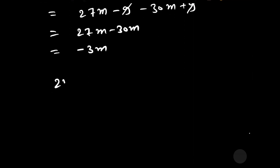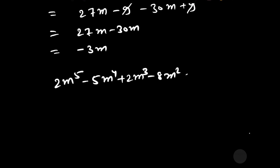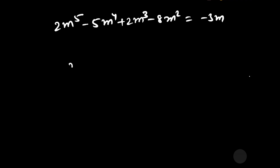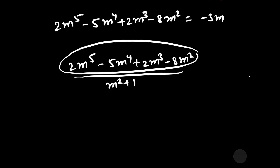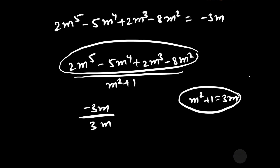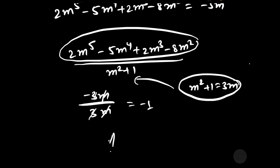Hence, the value of 2m⁵ − 5m⁴ + 2m³ − 8m² is equal to −3m. We have to find this divided by m² + 1. The numerator is −3m and the denominator m² + 1 = 3m, as already derived. So −3m divided by 3m gives −1. Our required answer is −1.